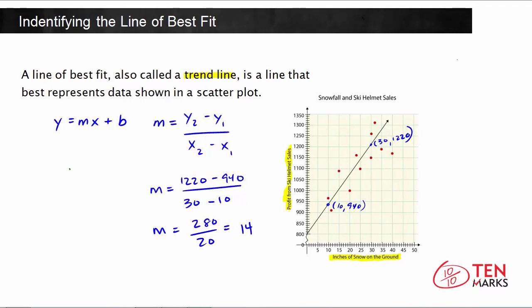Now that you know the slope, what you want to do is find the y-intercept, and to do that, choose one of the points that you began working with. I'm going to choose the point right here, (10, 940), and we have to keep in mind that our slope has a value of 14. So now we're going to use the same y = mx + b form, and substitute in the values that we know, given the point and the slope.